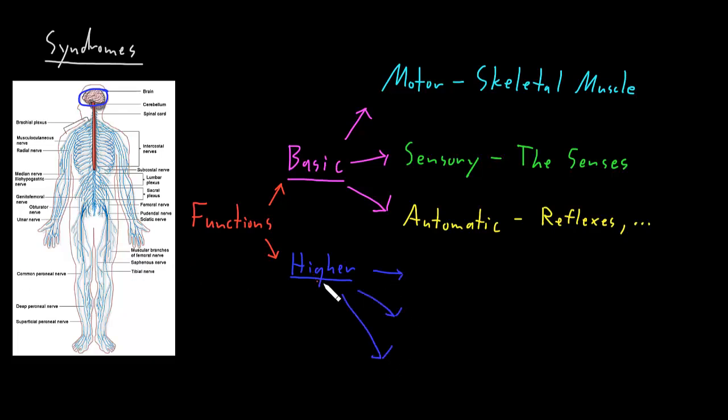The first big category of the higher functions of the nervous system I like to call cognition. People use this word in a number of different ways, so it can get confusing when you're reading about cognition. But I like to think of this as kind of the thinking functions of the brain.